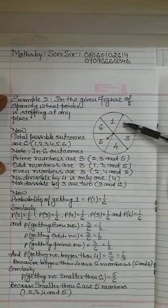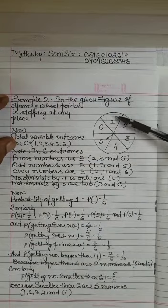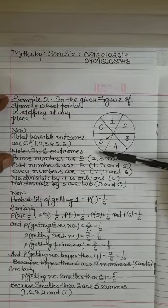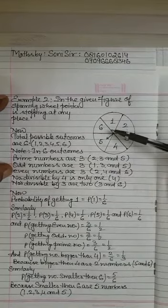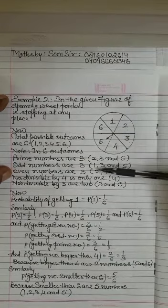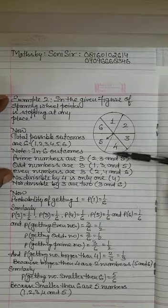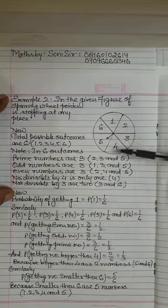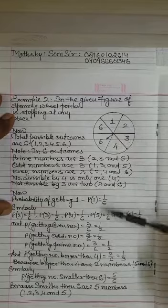Let us take another example with a similar spinning wheel. In this spinning wheel there are six parts marked as one, two, three, four, five, six — so total outcomes are six. Among these six numbers: prime numbers are two, three, and five — three prime numbers. Odd numbers are one, three, five — three odd numbers. Even numbers are two, four, six — three even numbers. The number divisible by four is only one, and numbers divisible by three are three and six.